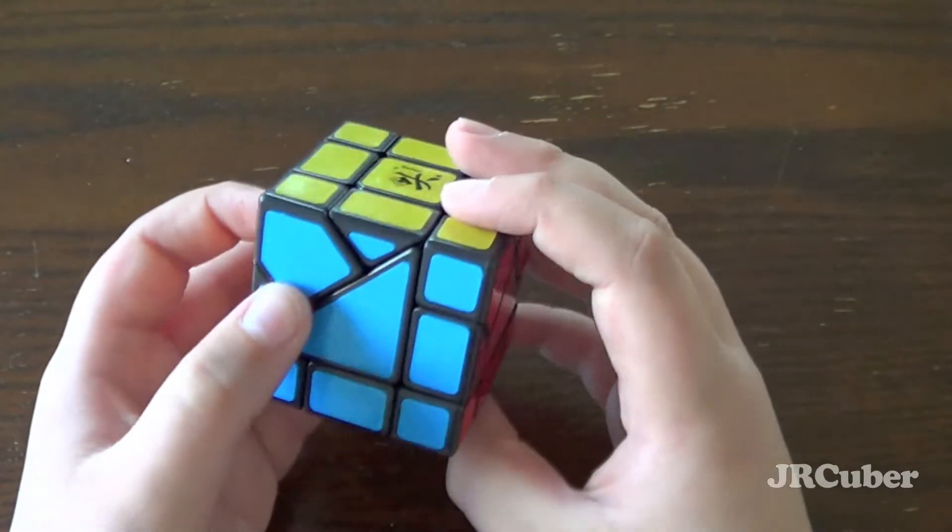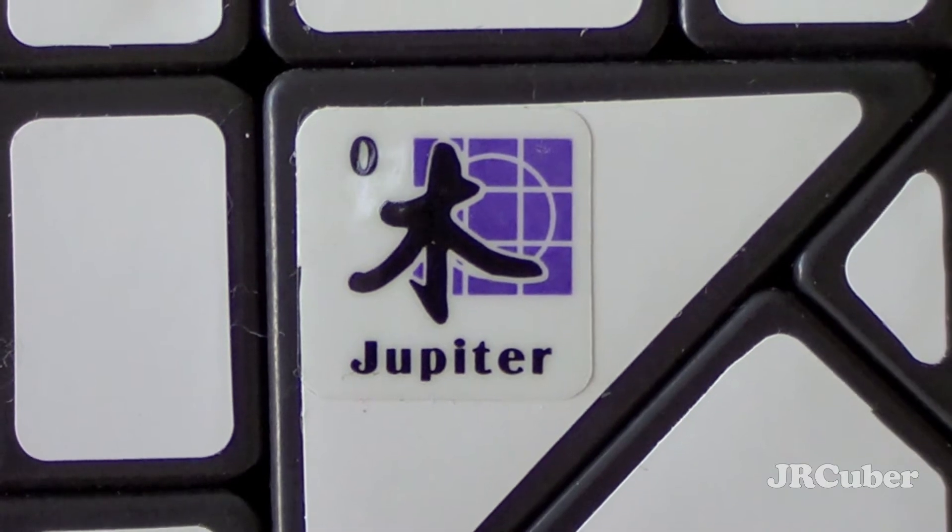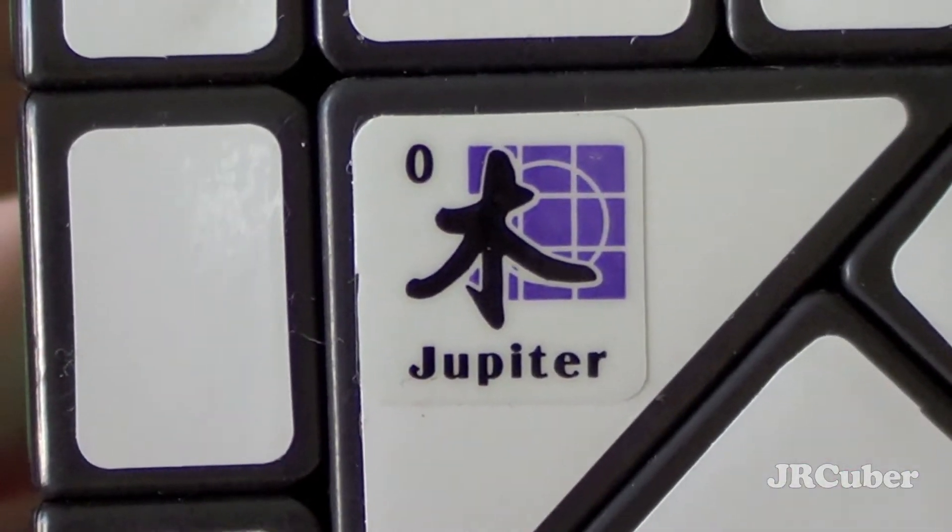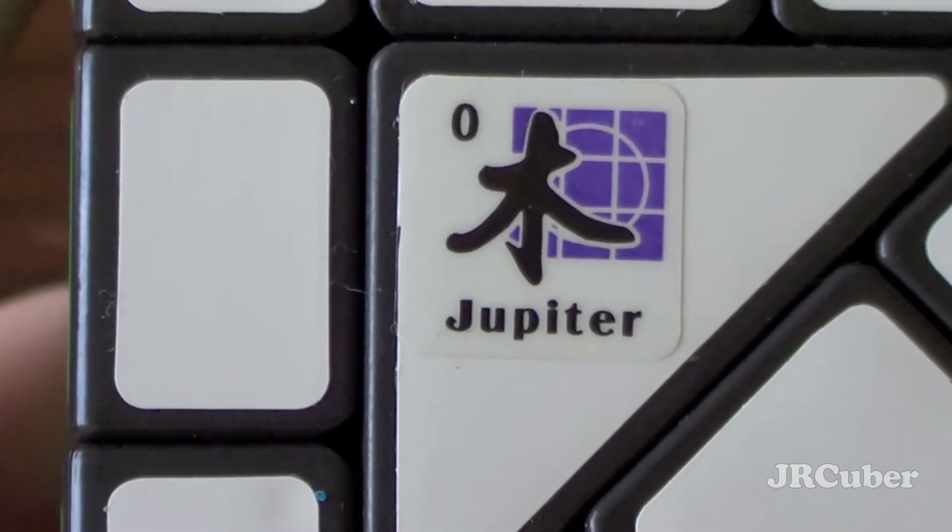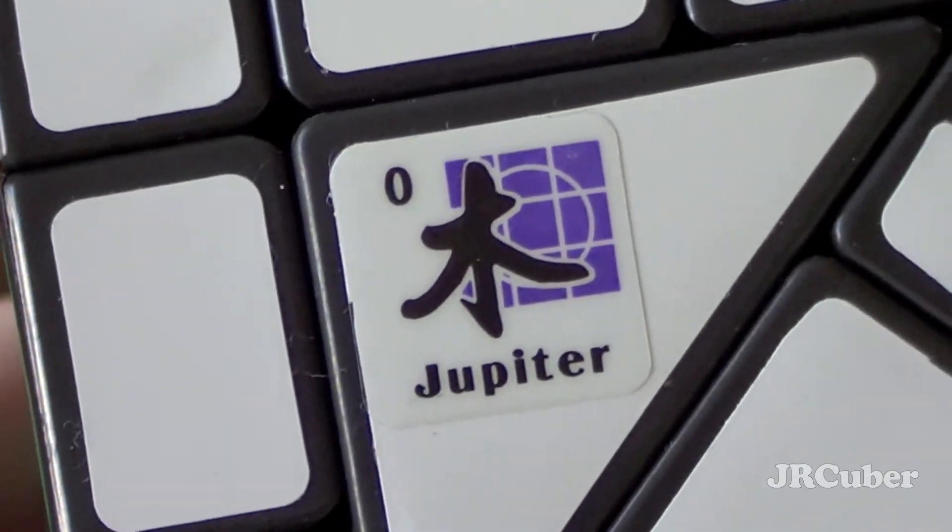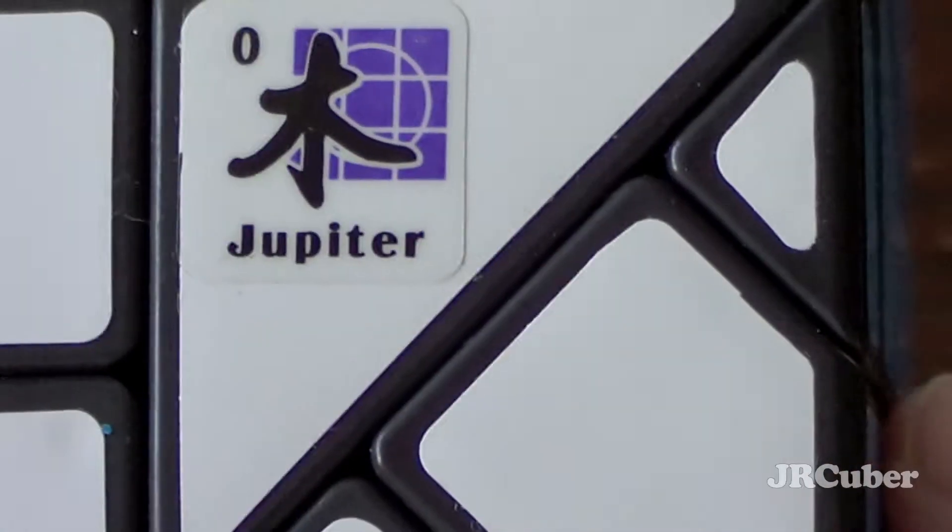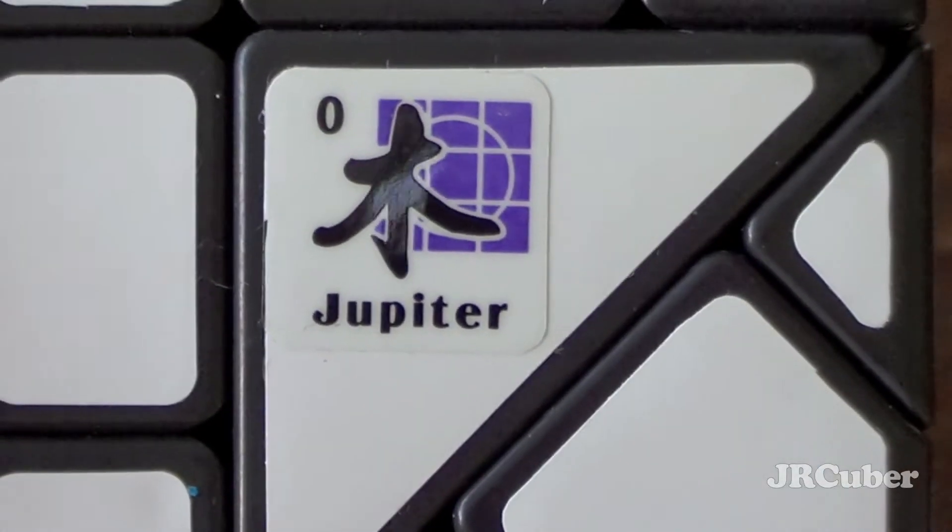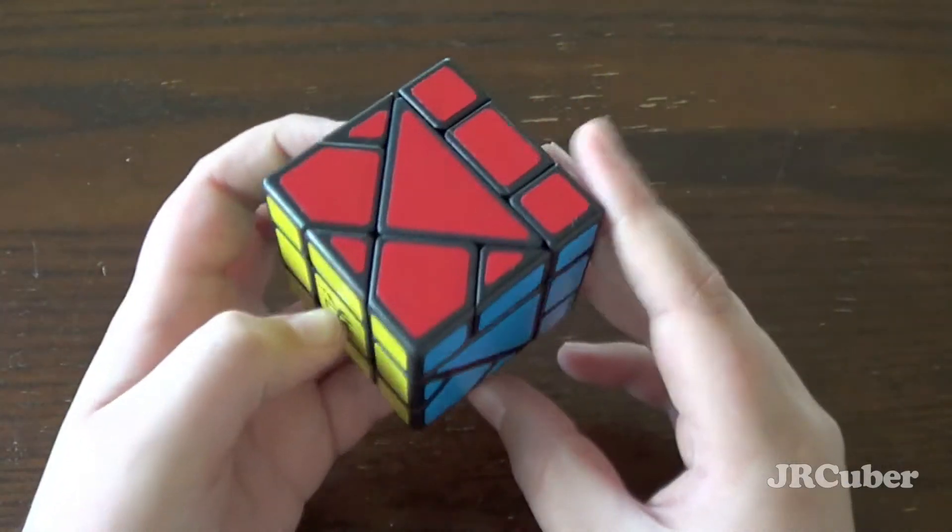So here's the Bermuda Cube. As you can see, I got the Jupiter puzzle. And I got the Jupiter puzzle because it is supposedly really hard and has a lot of these triangle sides, which I really like. So let's actually turn it.